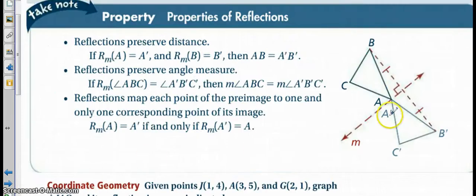So essentially what our properties are telling us here is everything that I said earlier, that we preserve the distances, that we preserve the angle measures, and that every point has to have a pre-image and an image point.